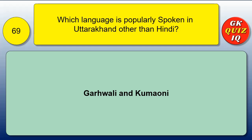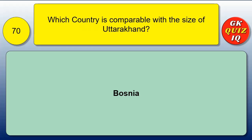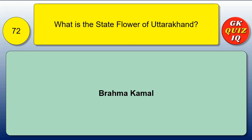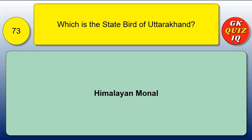Which language is popularly spoken in Uttarakhand other than Hindi? Garhwali and Kumaoni. Which country is comparable in size with Uttarakhand? Bosnia. Which is the state mammal of Uttarakhand? Alpine musk deer. What is the state flower of Uttarakhand? Brahma Kamal. Which is the state bird of Uttarakhand? Himalayan Monal.